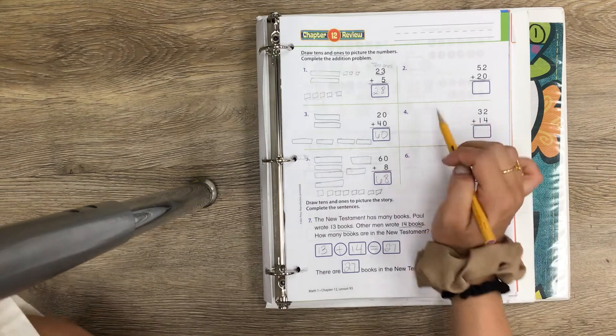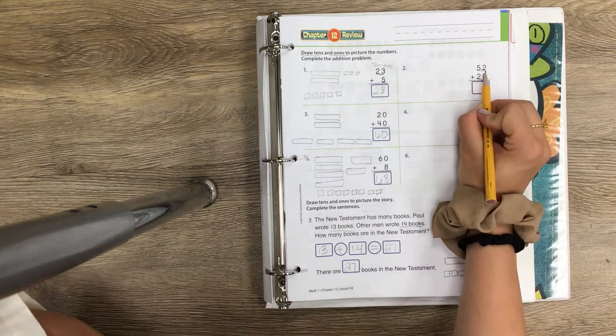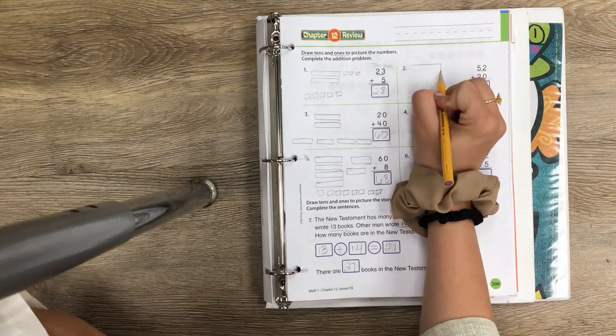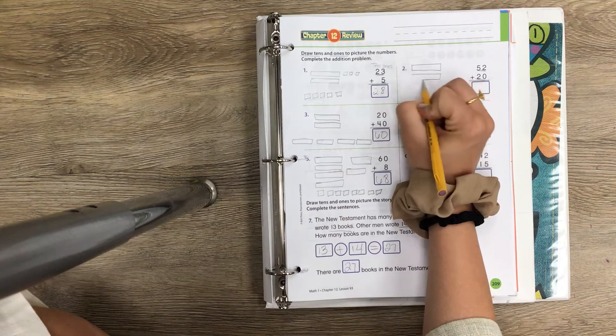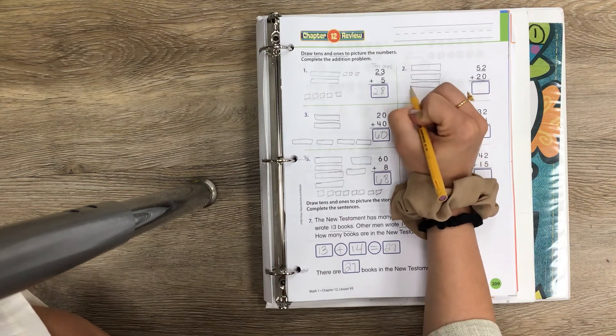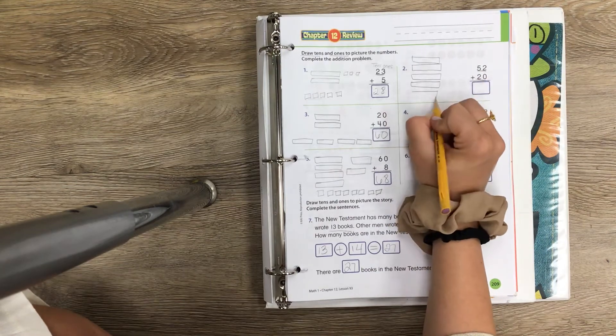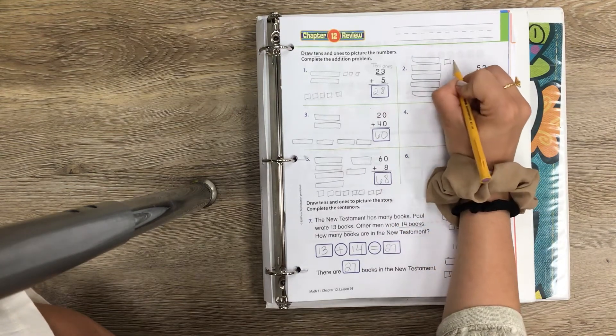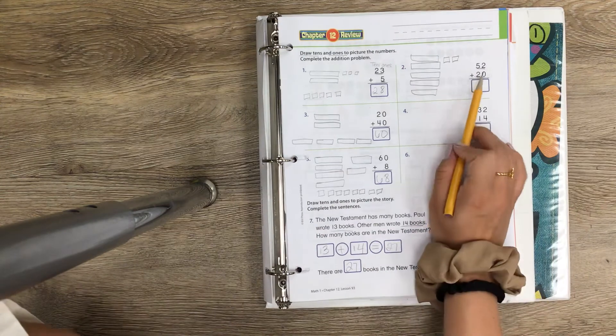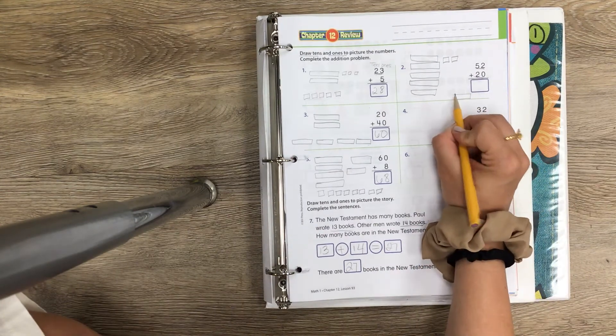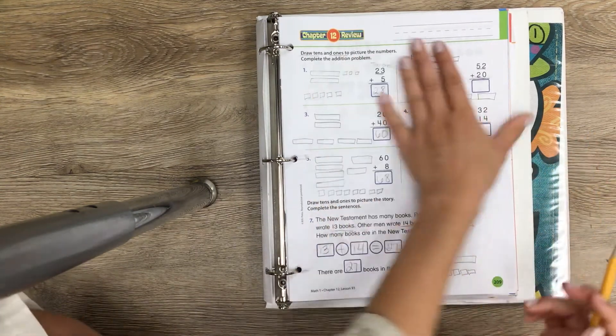So all you guys are going to be doing for 2, 4, and 6 is you'll draw out 52: 10, 20, 30, 40, 50, 51, 52. Then they want you to draw out 20, which is just two tens, right? 10, 20. Then they want you to add up all those together and that'll be your answer.